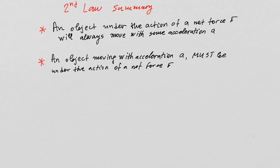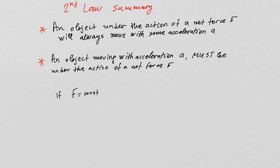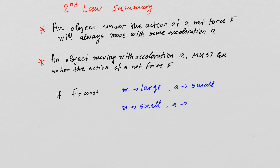To summarize Newton's second law: an object under the action of a net force F always moves with some acceleration A, and conversely, an object moving with acceleration A must be under a net force F. With constant force, large mass gives small acceleration and small mass gives large acceleration — they are inversely proportional.